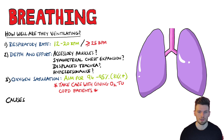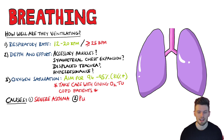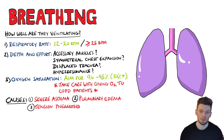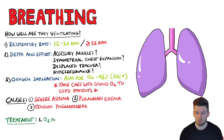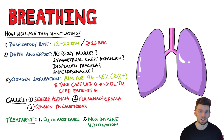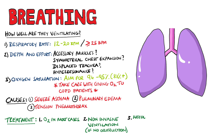Life-threatening causes of breathing issues include acute severe asthma, pulmonary oedema, and tension pneumothorax. Treatment again depends on the cause. Oxygen is given in most cases, and if no obstruction is present, non-invasive ventilation is another option. A tension pneumothorax would need needle decompression, performed at the second intercostal space at the mid-clavicular line.